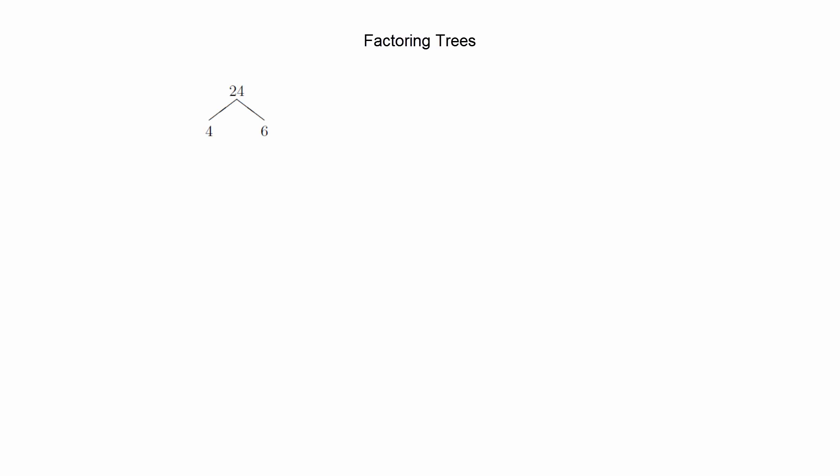These are diagrams where you start with a number and try to factor it into the product of two smaller numbers, and then repeat the process until you end up with numbers that no longer can be factored. Those numbers at the bottom are called primes, and this process yields the prime factorization of the initial number.